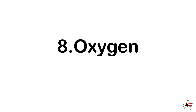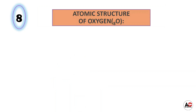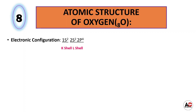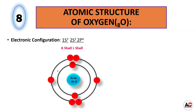Now oxygen. Atomic structure of oxygen. The atomic number of oxygen is 8, which shows it has 8 electrons. So the electronic configuration of oxygen is 1s2, 2s2, and 2p4. With the help of this electronic configuration we can easily draw the atomic structure of oxygen. It has 8 protons and 8 neutrons inside the nucleus and 8 electrons around the nucleus: 2 are in the K shell and 6 are in the L shell.